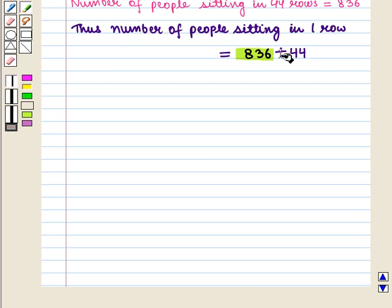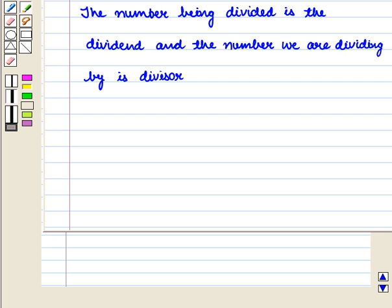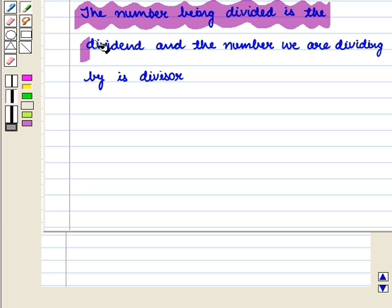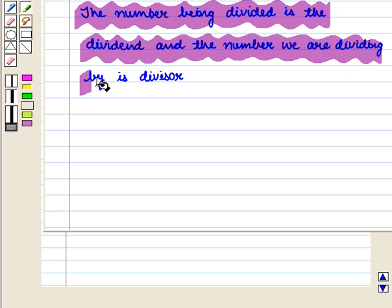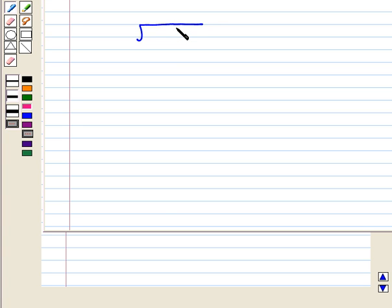So now we divide 836 by 44. We know that the number being divided is the dividend and the number we are dividing by is divisor. So inside we write the dividend that is 836 and outside we write the divisor that is 44.